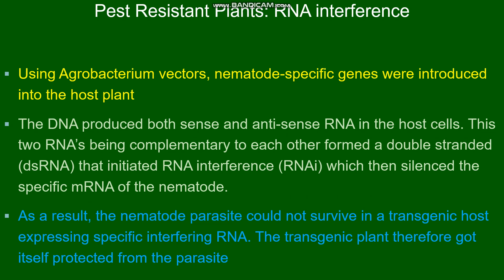Nematode-specific genes are isolated from the nematode and introduced into the host tobacco plant using the vector Agrobacterium. In recombinant DNA technology, the useful gene is the nematode-specific gene, the vector is Agrobacterium, and the host is the tobacco plant. Using Agrobacterium vectors, nematode-specific genes were introduced into the host tobacco plant.